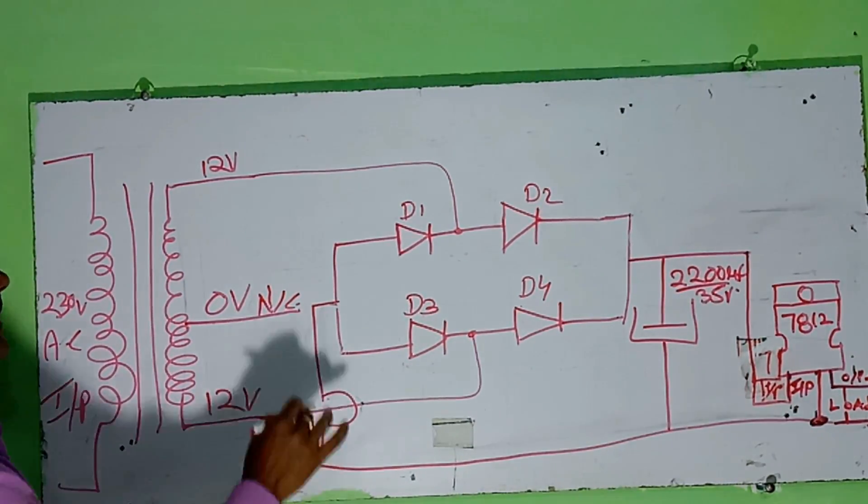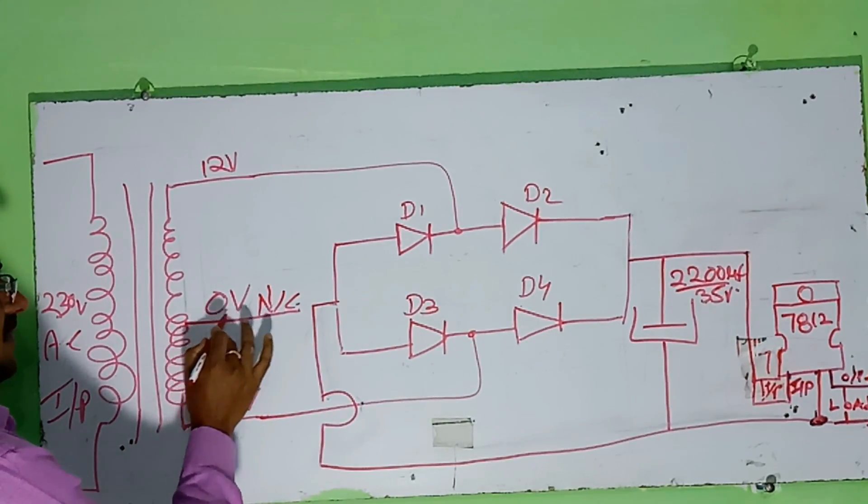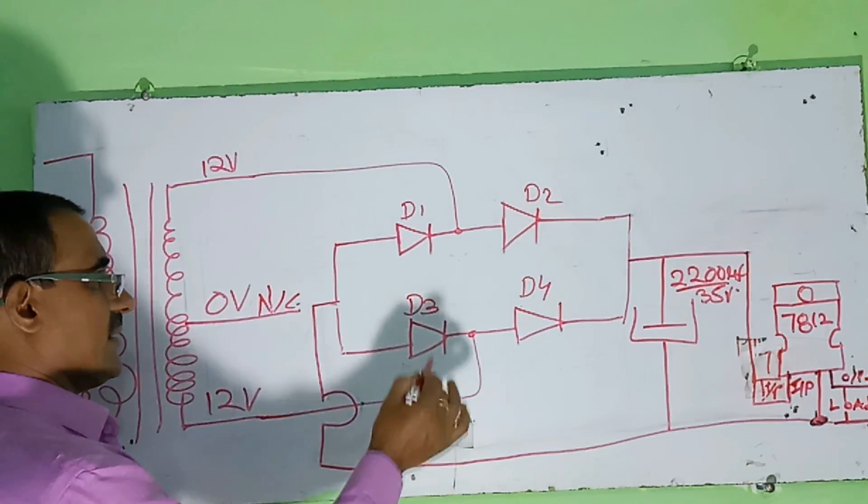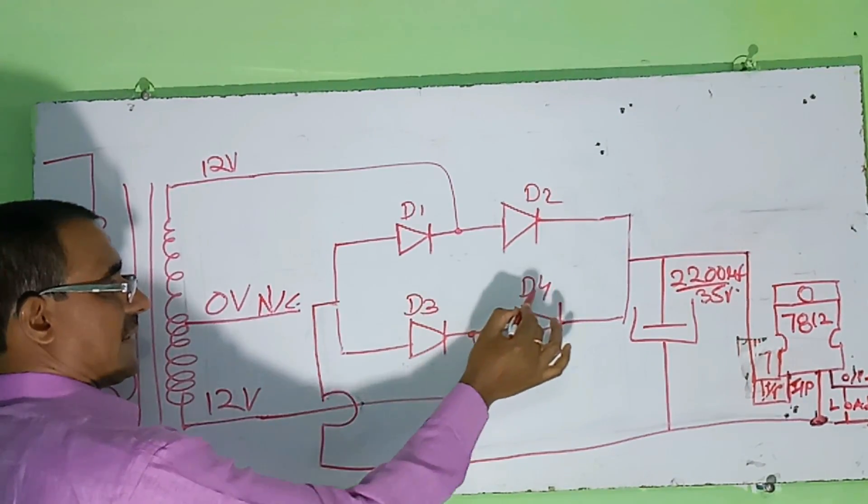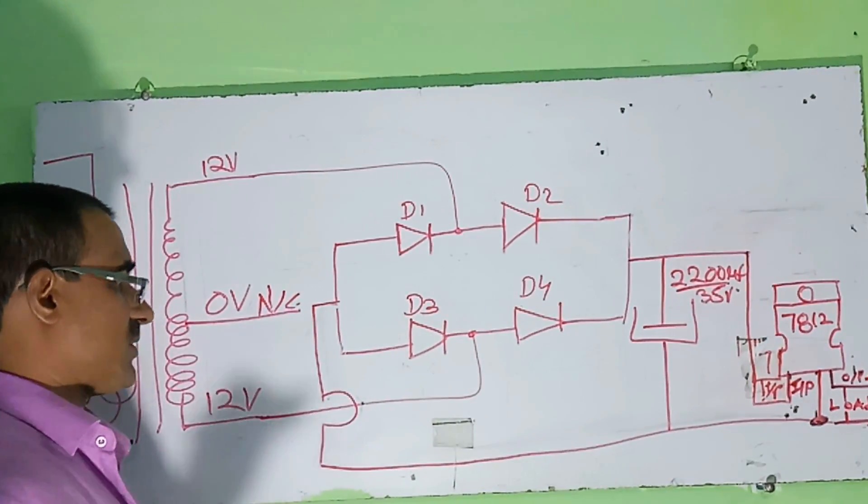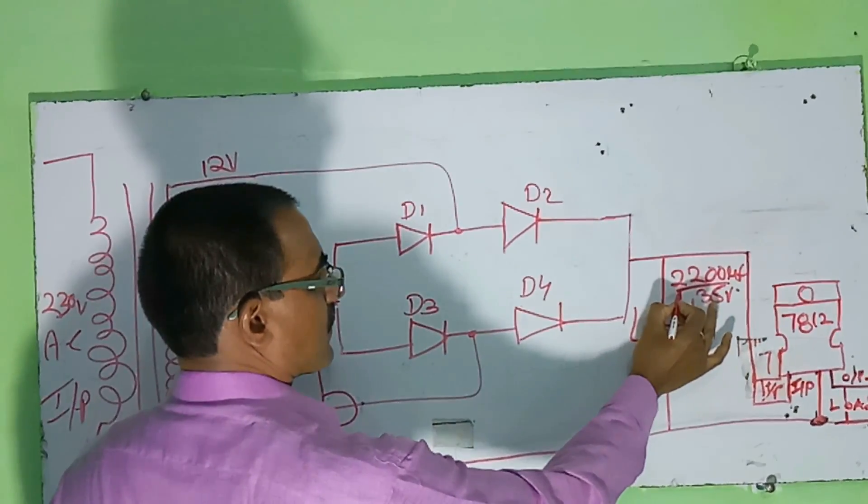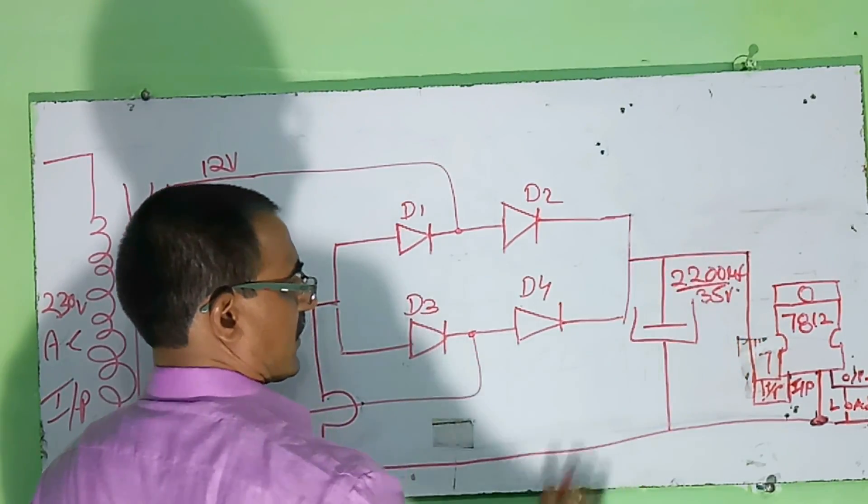Center tap transformer I will take. I will take two taps and one is the no connection. I will take IN4007 diodes, the D1 and D2, D3, D4 is the IN4007 diodes. After that I will take 2,200 microfarad 55V.